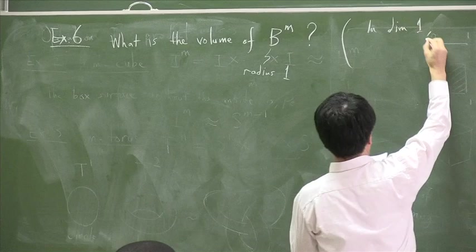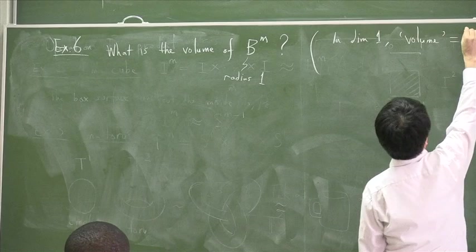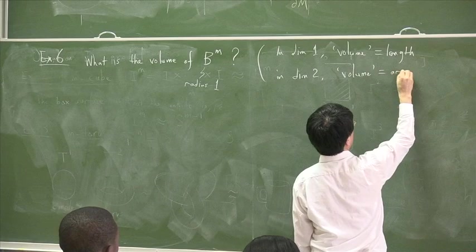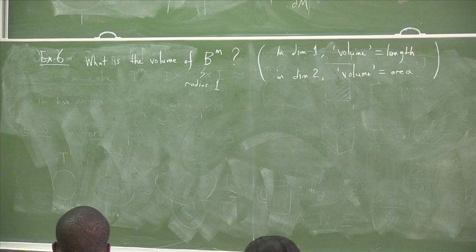In dimension one, we don't talk about volume. Instead, we talk about length. And in dimension two, volume really means area, as you can imagine. But scientists are lazy people. They don't want to be talking about different words all the time, so we talk about volume all the time.